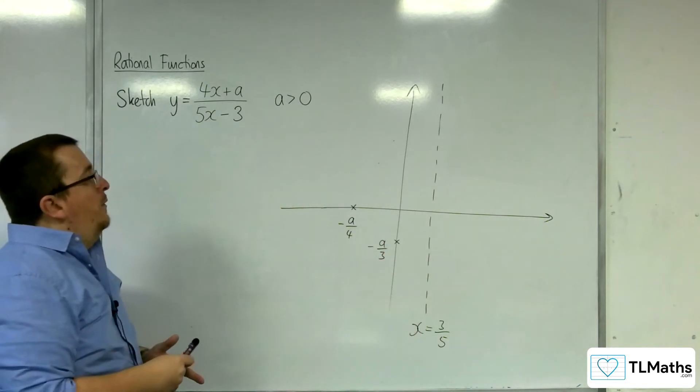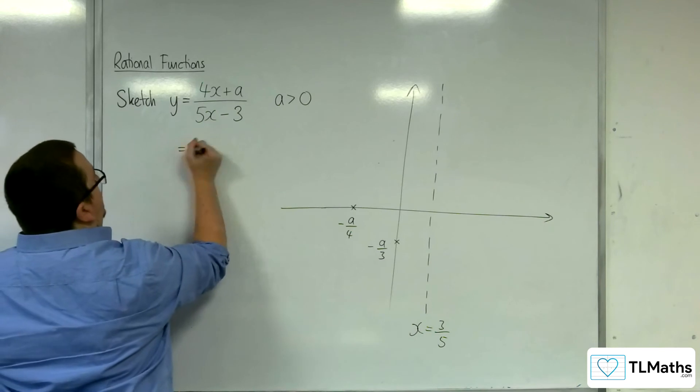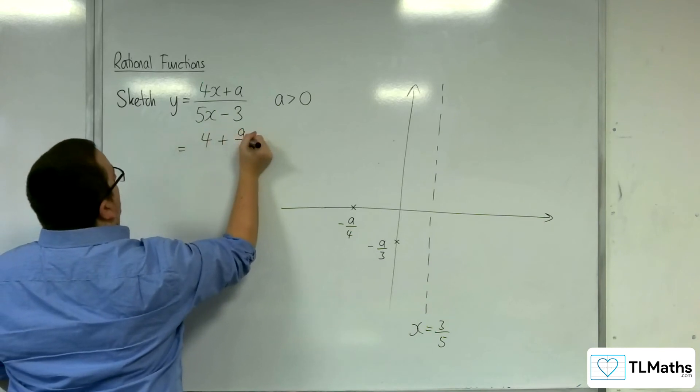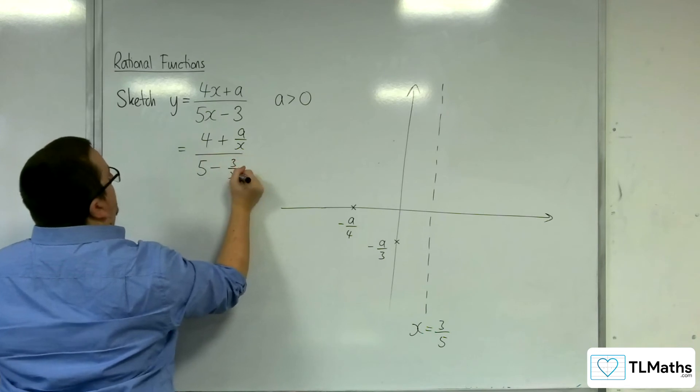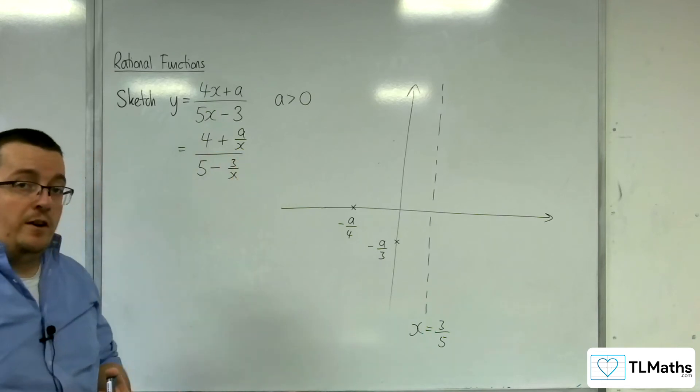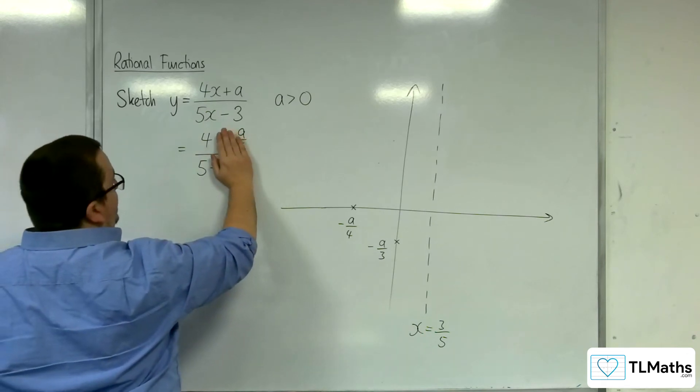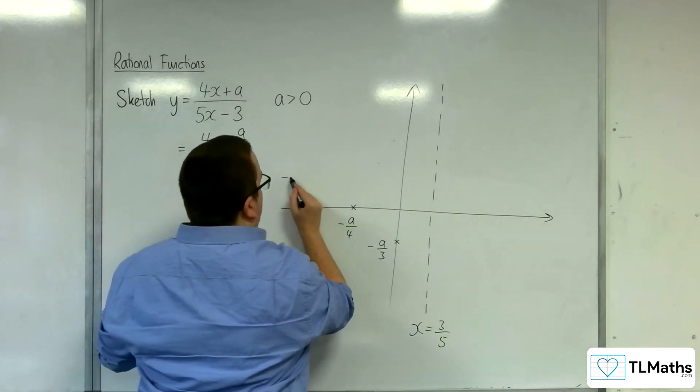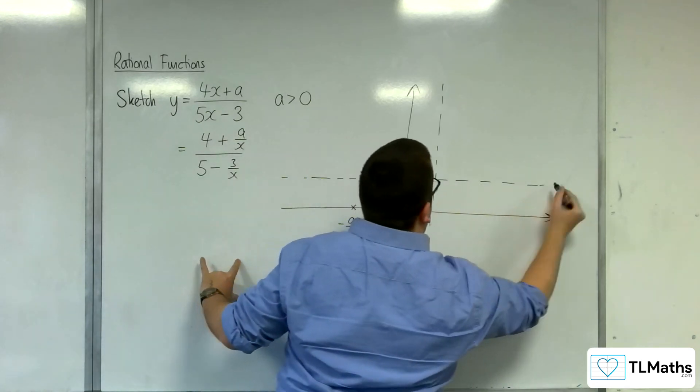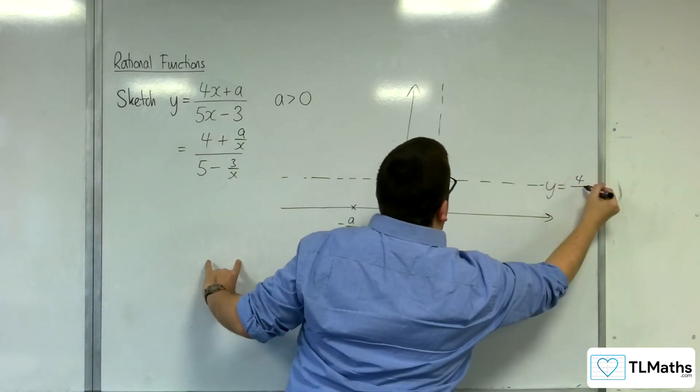Right, how about the horizontal asymptote? Well, we'll divide top and bottom by x. 4 plus a over x over 5 take away 3 over x. Now, as x tends to infinity in either direction, those fractions are going to tend to 0, and so we'll have y equals 4 over 5. So y equals 4 over 5 there.